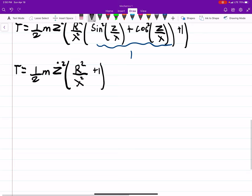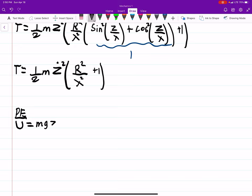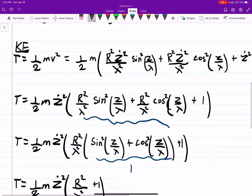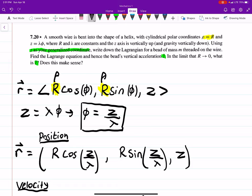And then the next thing we need is the potential energy, which is pretty easy in this case. So the potential energy is just going to be mgz since that's our height because we're in cylindrical coordinates. And I think it even mentions in the problem z is vertically up.